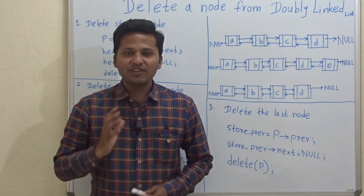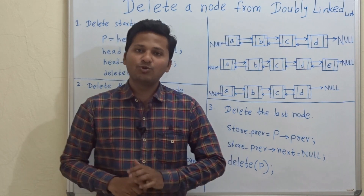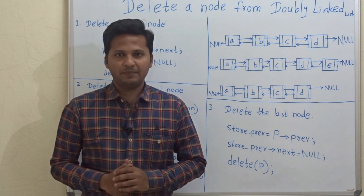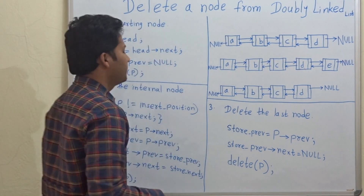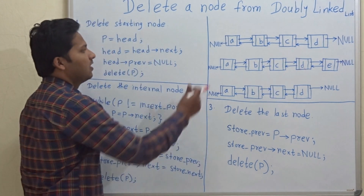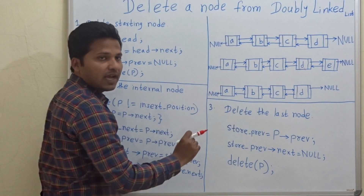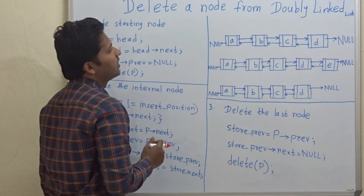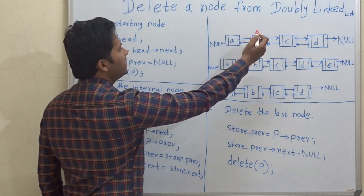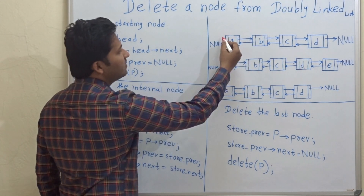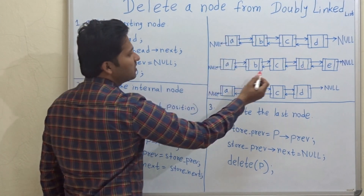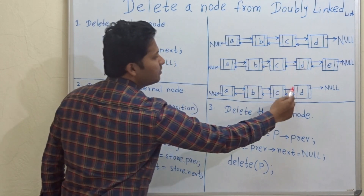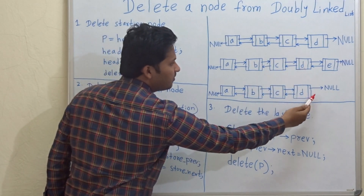Hello friends. Today we are going to see how to delete a node from a doubly linked list. Let's see some examples. These are three examples and they represent three different cases. The node which we want to delete can be at the start, can be in the middle somewhere, or it can be at the end.